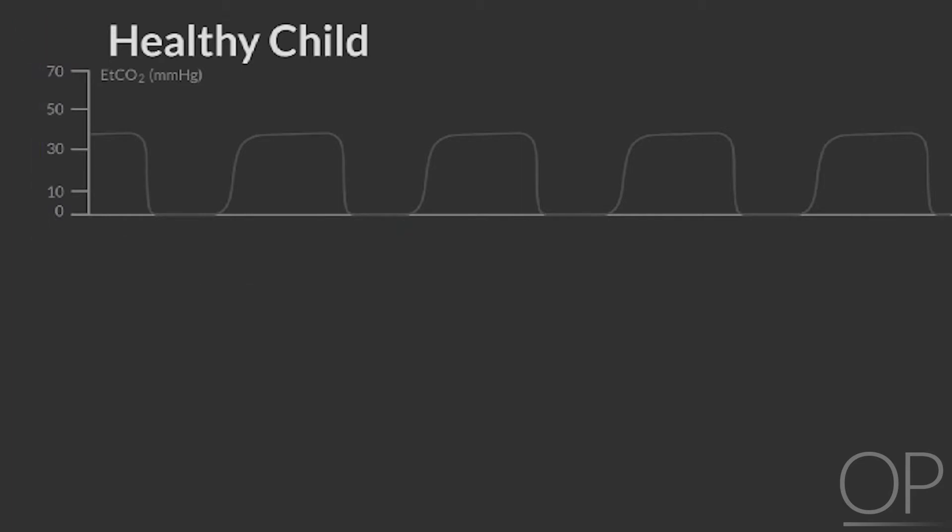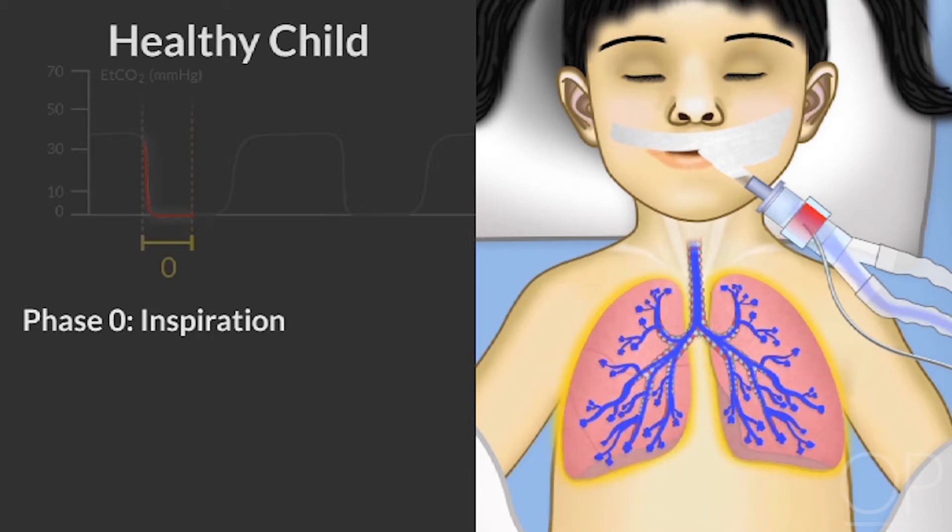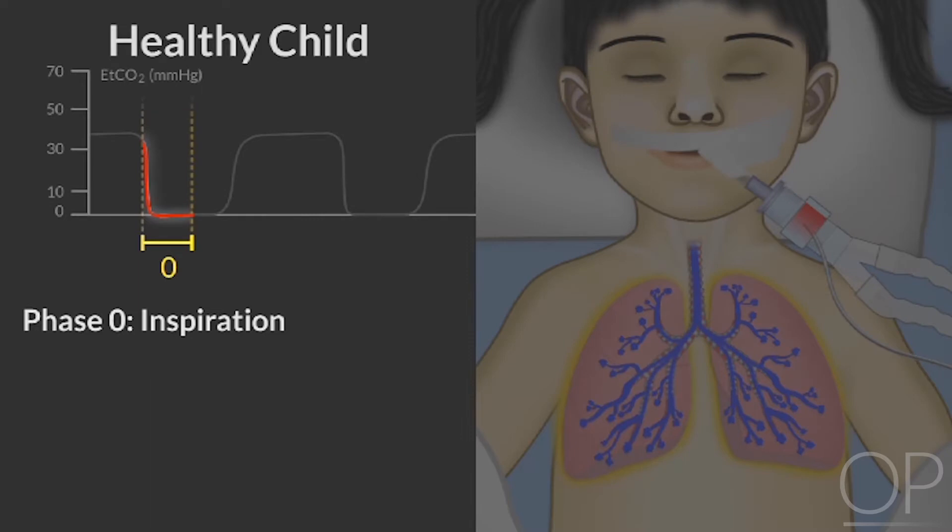Each CO2 wave can be broken down into four distinct parts, or phases. Phase 0 occurs during inspiration. As the child inhales fresh gas from the mechanical ventilator, it passes by the CO2 monitor sensor down the endotracheal tube and into the lungs. You can see here that the concentration of CO2 is 0 during this phase.